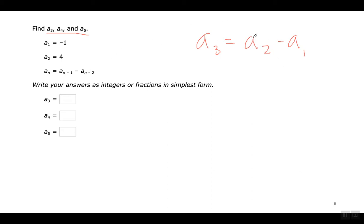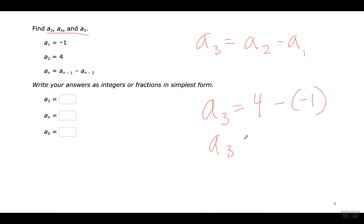Para encontrar el tercer término: el segundo término menos el primero. Now look, so that you don't mess this up — four minus negative one, there's going to be two negative signs there. Four minus negative one: the two negatives become a positive. Esos dos negativos se cambian a un positivo. Cuatro menos negativo uno. If you only put one minus sign, you're going to get it wrong. So this one's five.